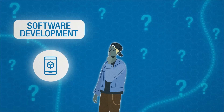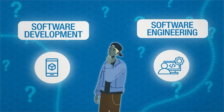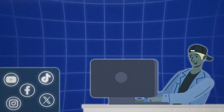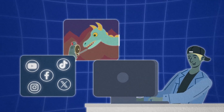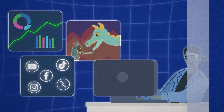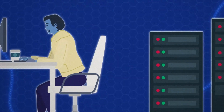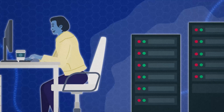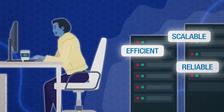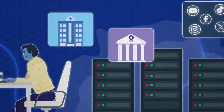What about software development versus software engineering? Both sound similar, but they focus on different things. Software development is all about designing and building applications, like social media apps, video games or productivity tools — creating tech that solves problems or makes life easier. On the other hand, software engineering focuses more on designing and maintaining large-scale systems and software that need to be efficient, scalable and reliable. Think of building the infrastructure that supports massive apps or systems, like the ones used in banking, healthcare or social networks.